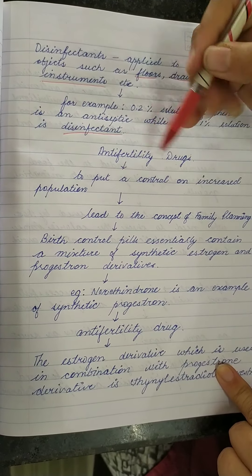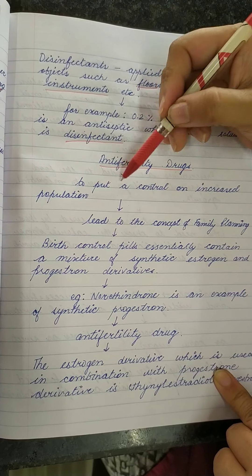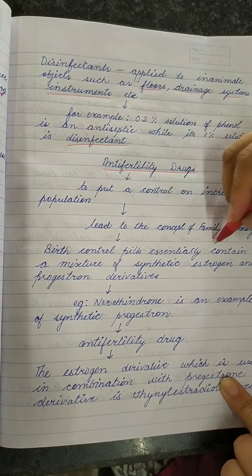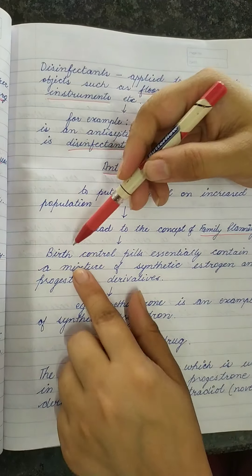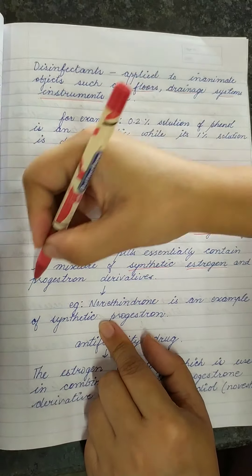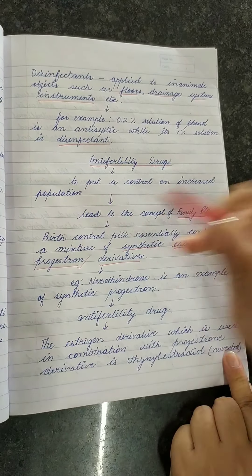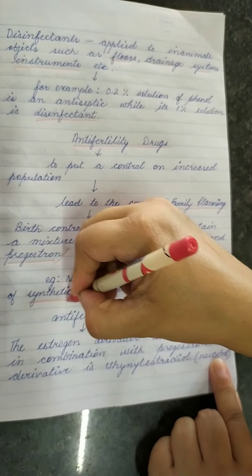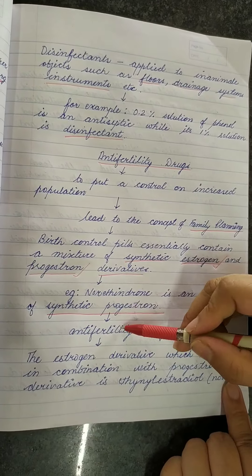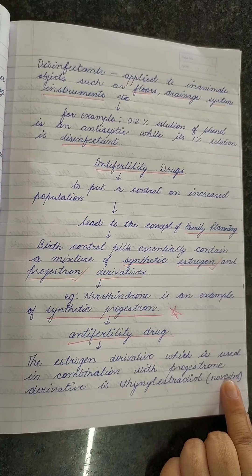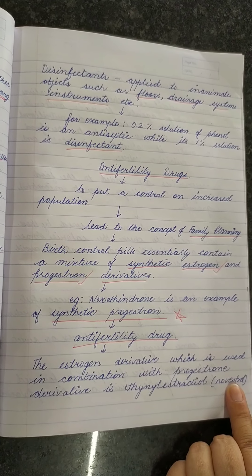Anti-fertility drugs are very important. To control the increased population we use anti-fertility drugs, which led to the concept of family planning. Birth control pills essentially contain a mixture of synthetic estrogen and progesterone derivatives. Norethindrone is an example of a synthetic progesterone derivative and is an anti-fertility drug — this is always asked in the exam.